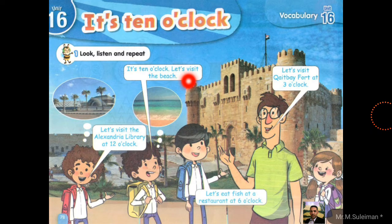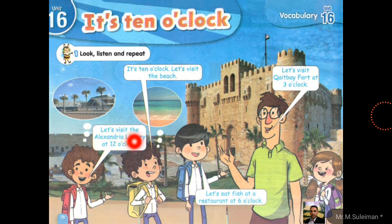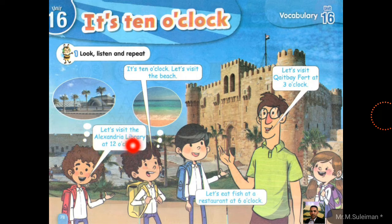Number two: let's visit the Alexandria Library. Here we use 'the' plus vowel, so we say 'the Alexandria.' But in number one we said 'the beach' — 'the' plus consonant. Here we say 'the Alexandria Library at 12 o'clock.' Time here is 12. Let's visit the Alexandria Library. This is Alexandria Library.